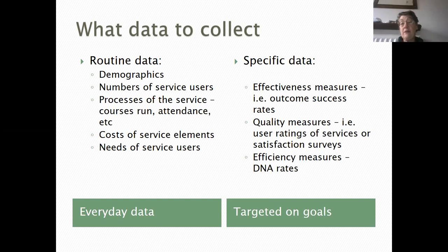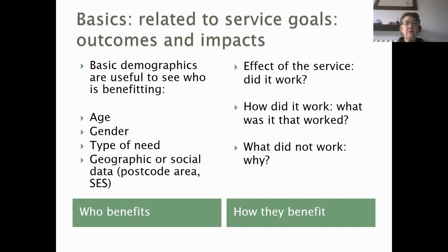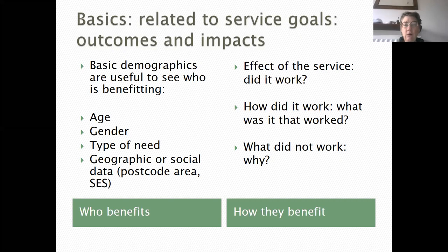That feedback might come not necessarily from service users but also from people who are commissioning you to deliver the service, and how well they see your efficiencies. Efficiency measures such as did-not-attend rates might be particularly important. I'm going to split this into two kinds of knowledge we want to know about in a service: who's benefiting and how are they benefiting. In my second presentation I'll give a good example of how that information can be quite useful but also quite controversial. It's usually related to your service goals, your outcomes and impacts.